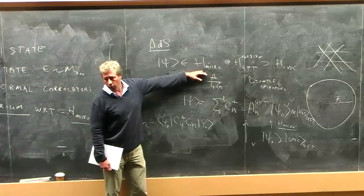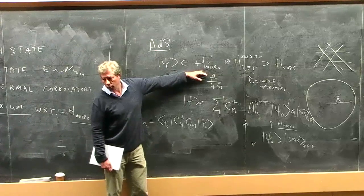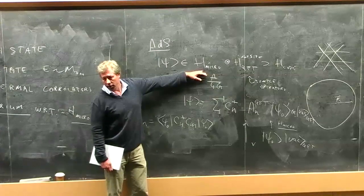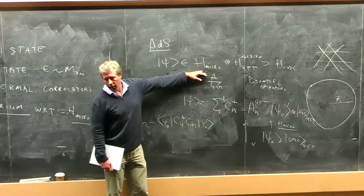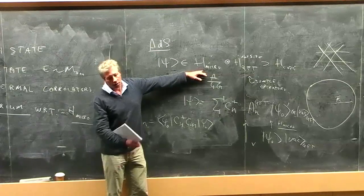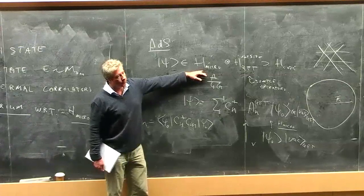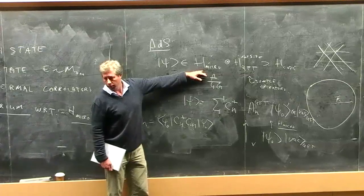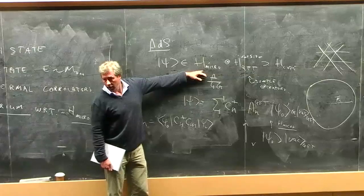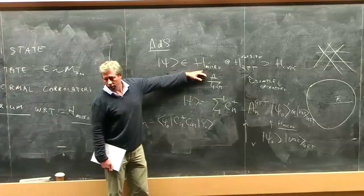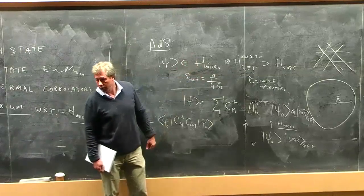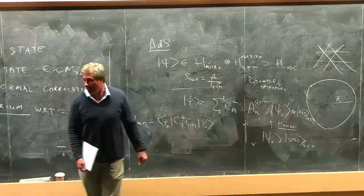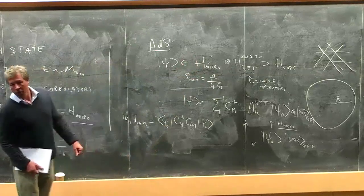You can do this reconstruction as long as the algebra you're trying to reconstruct and the size of the code space is small enough that you have sufficient space. This is a construction that does not depend on the background or the state, because this is partly what error correction does — you try to reconstruct the interior state without state dependence. This is a different statement about background dependence than the previous speaker's approach.